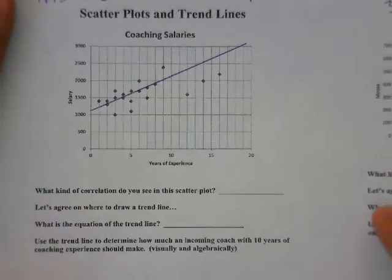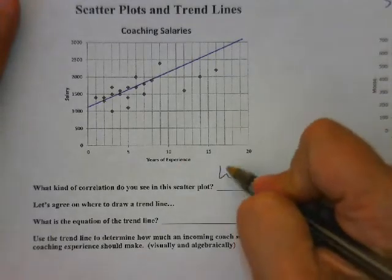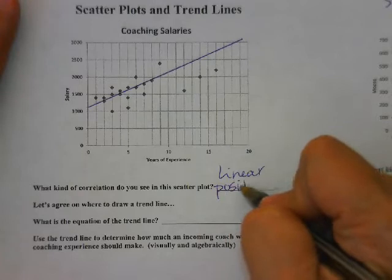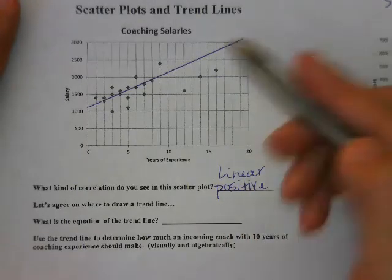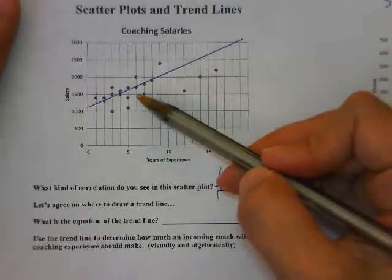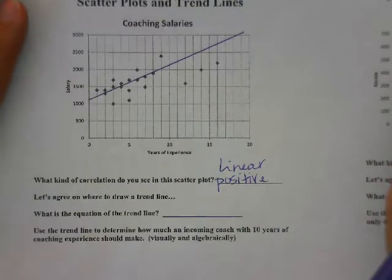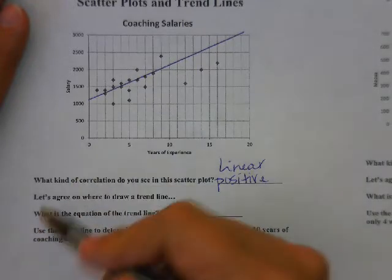We can do a couple of things with this. What kind of correlation is this? Positive correlation. These are pretty close, not super close, so you can make a case for a stronger or weaker correlation. Next year we're going to use the calculator to find that specificity. That's the reason we've already drawn our trend line.